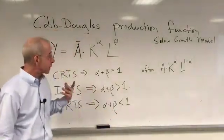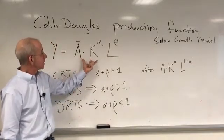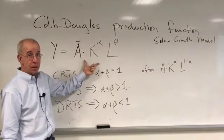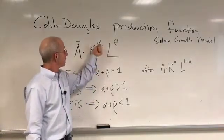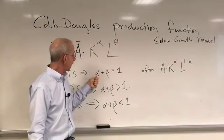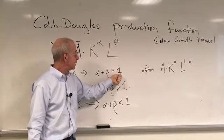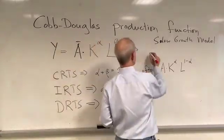...that output increases by the same proportion. Now, it turns out that mathematically, constant returns to scale in the context of a Cobb-Douglas production function is going to be such that if you add the two exponents, alpha plus beta, they have to equal one.